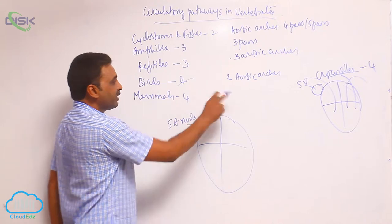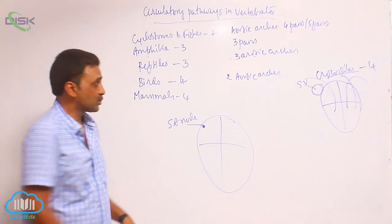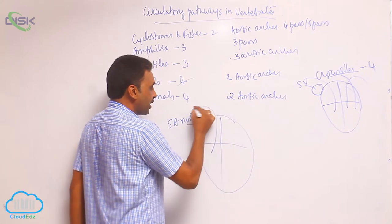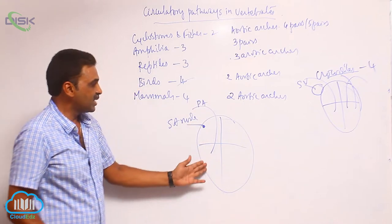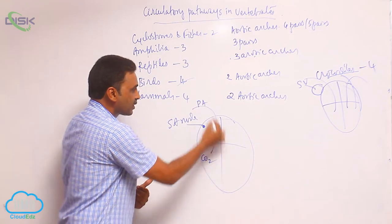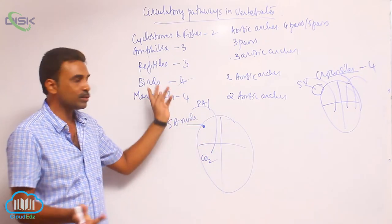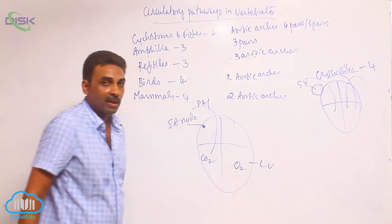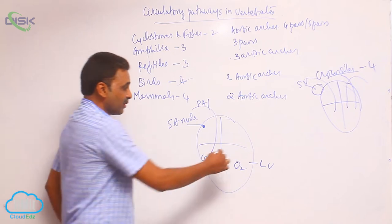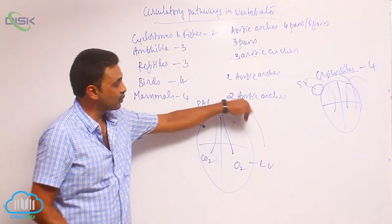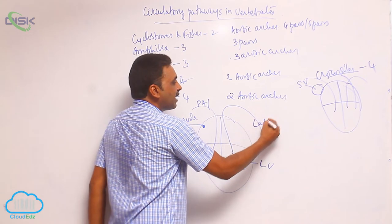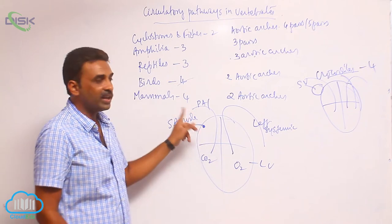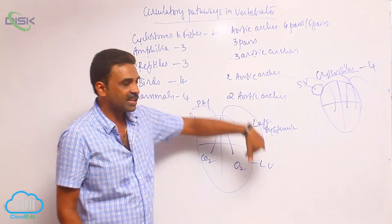Associated with the mammalian heart, we have two aortic arches only. One is the pulmonary arch — it starts from the right side, takes deoxygenated blood, goes outside, divides into two, and goes to the lungs. From the left ventricle originates a single systemic arch. The systemic arch goes to the left side, which is why we call it the left systemic arch. In birds it went to the right side, but in mammals it goes to the left side — that is the only difference.